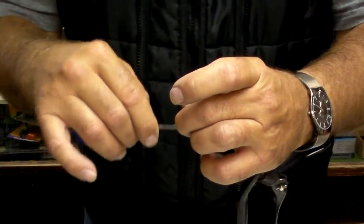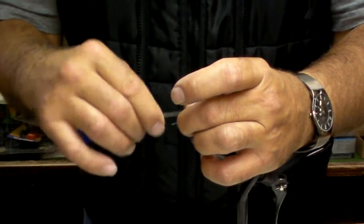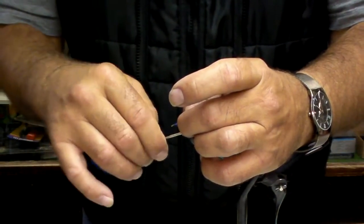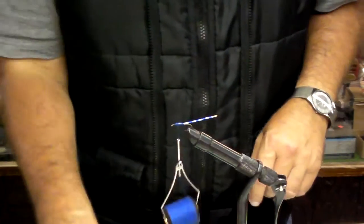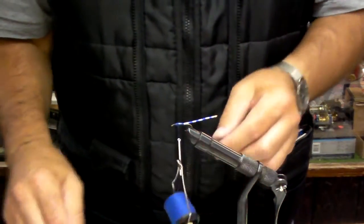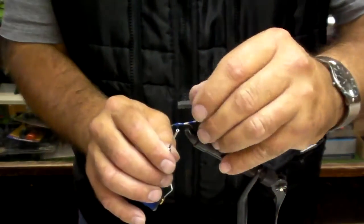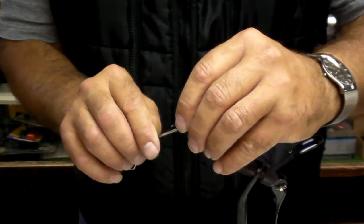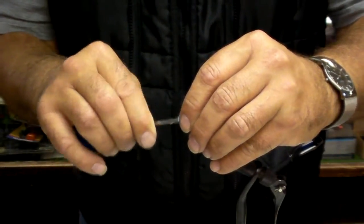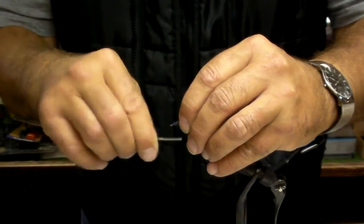I'm going to tie on the foam which we're going to use as a thorax cover. It's a piece of black foam here. I'm going to bring this up and we're going to cut it to shape afterwards. I'm going to put the hackle over the top of this to make the legs.